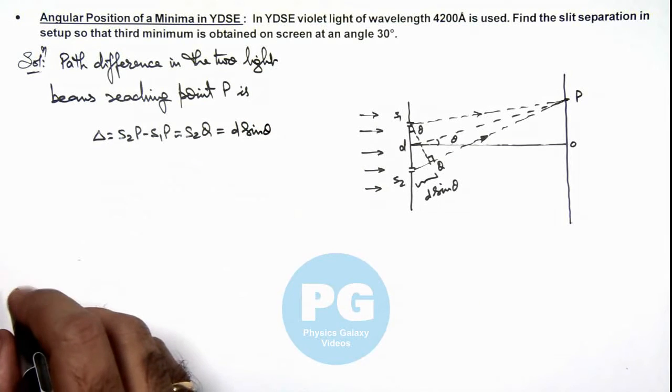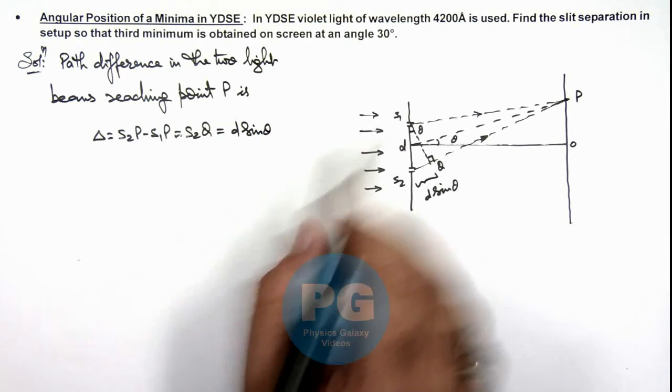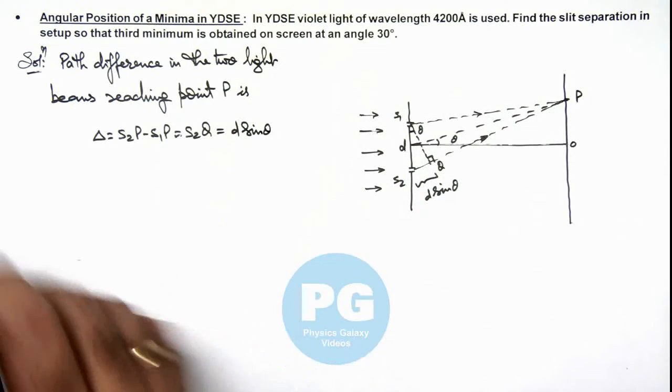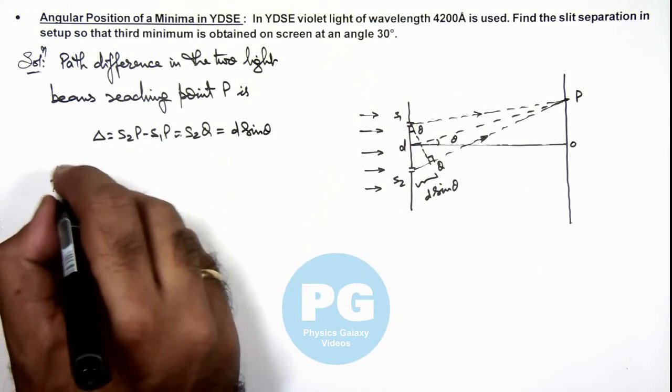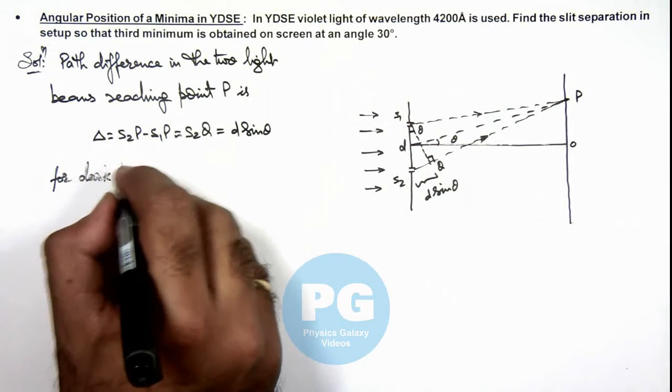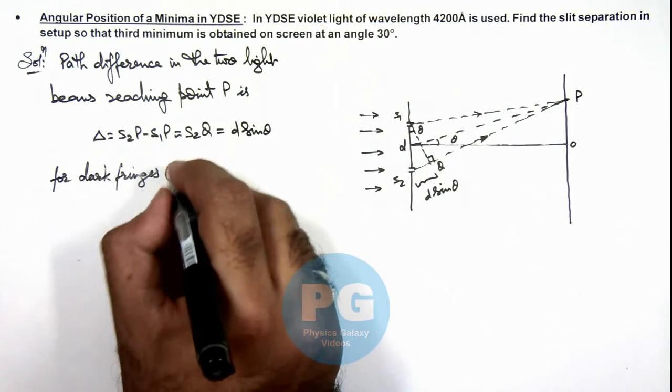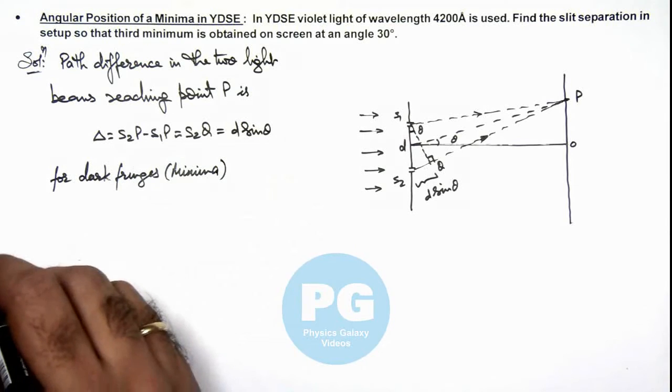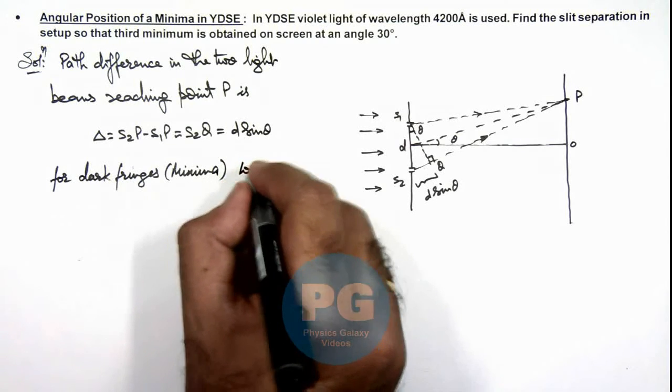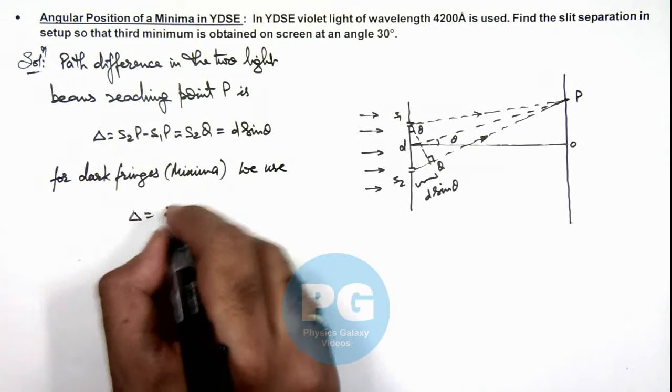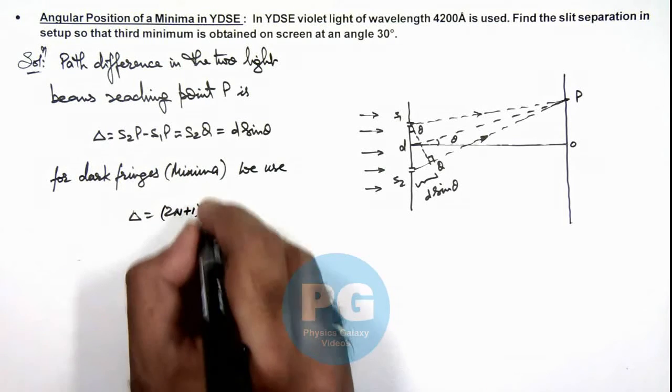And we are given that at an angle 30 degrees, third minima is obtained. So we know for dark fringes, which are also taken as minima on screen, we use this path difference delta should be (2n+1)lambda by 2.